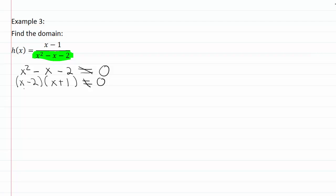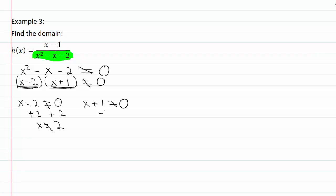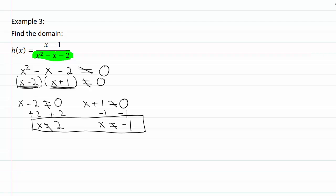We still don't want x minus two times x plus one to equal zero. Using the zero product rule, if either factor equals zero we have a problem, since zero times anything is zero. So we need x minus two to not equal zero and x plus one to not equal zero. Solving gives x is not equal to two, and x is not equal to negative one. These are the two values that would make the denominator zero and give us an undefined expression, so they are the limits we place on the domain of this function.